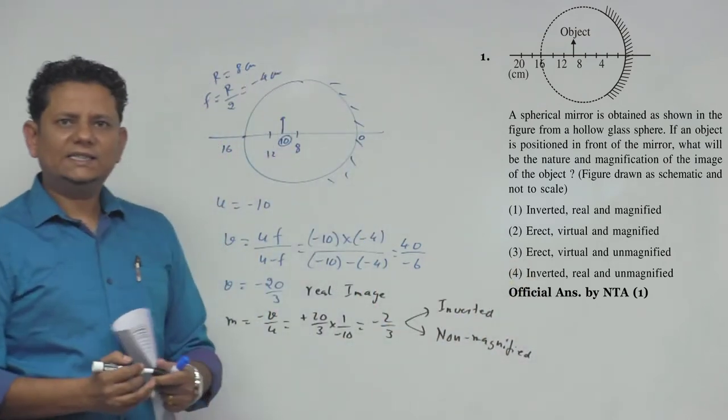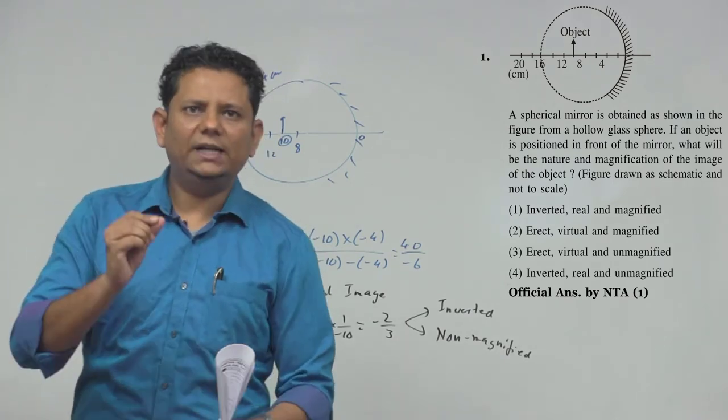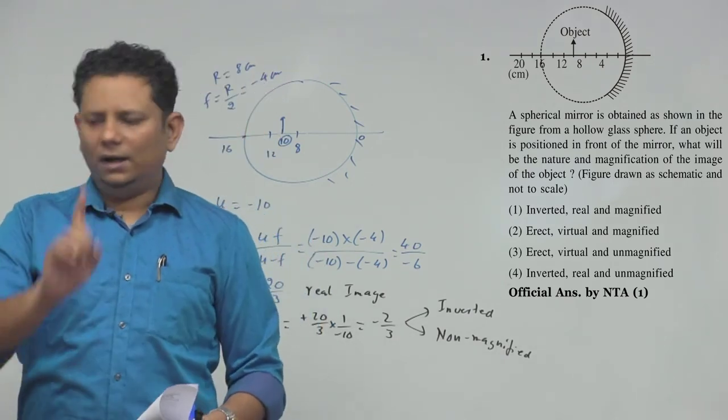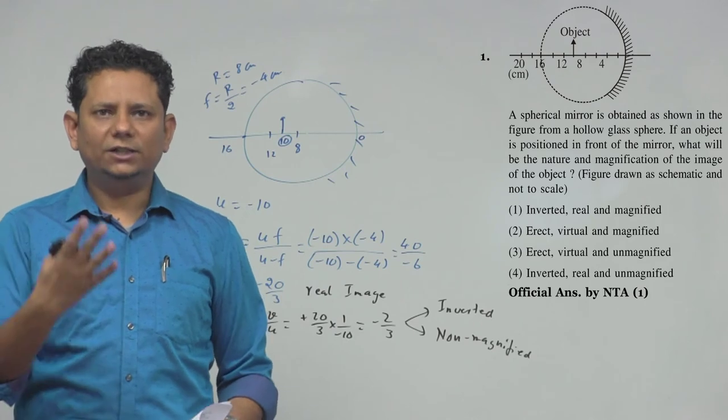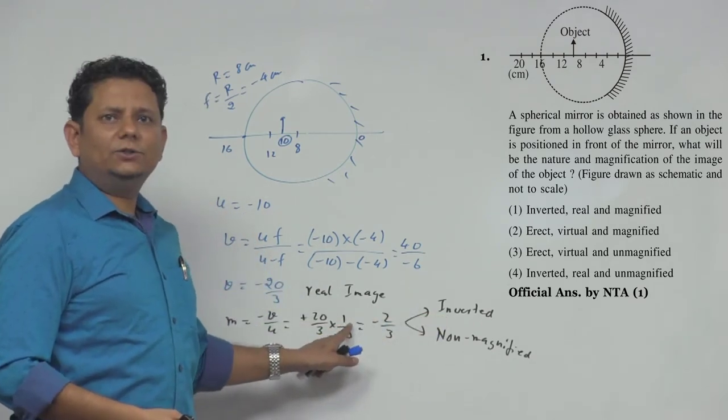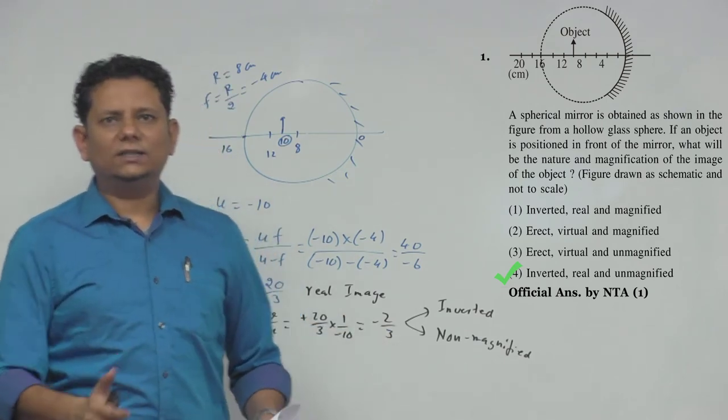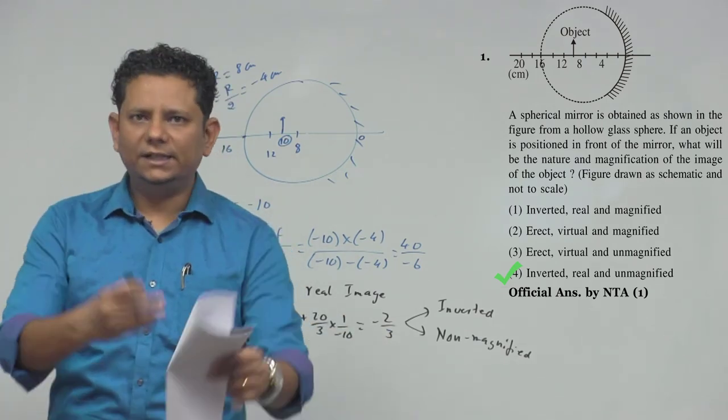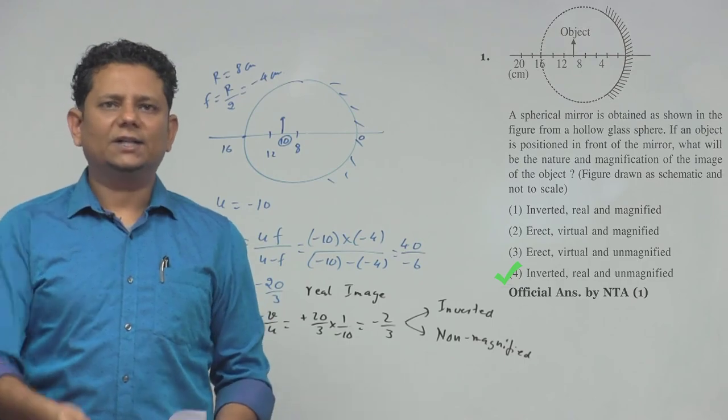Now what's interesting in this question is that officially NTA ने answer दिया है 1. According to me, the answer should be 4 because the image is inverted, real, and non-magnified. So answer should be 4. It's possible कुछ दिनों में इस पर correction आ जाए.